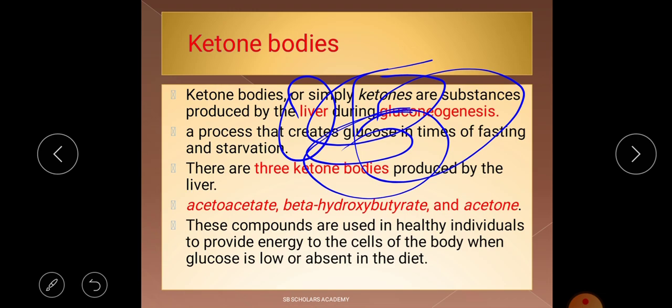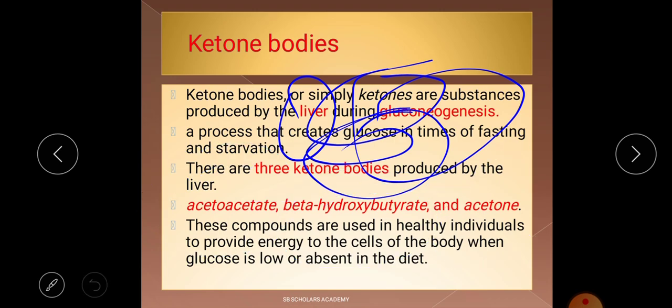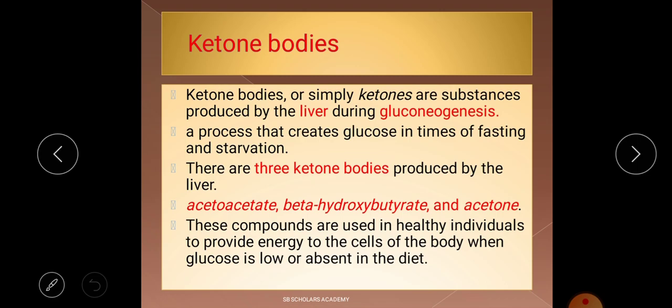There are majorly three ketone bodies — this is an important exam question. The three ketone bodies are: acetoacetate, beta-hydroxybutyrate, and acetone. This is a key point, marked in red, important from the examination point of view. You may be asked to identify which is a ketone body from a list of names.